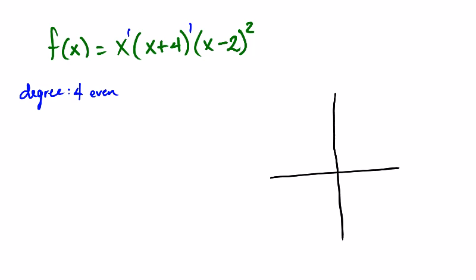And if you look at the way the problem is structured, the leading coefficient, if we were to multiply it all out, would be a positive 1. And so it's positive. So even and positive means that the arrows should point up in both directions.